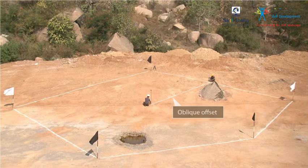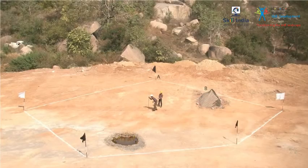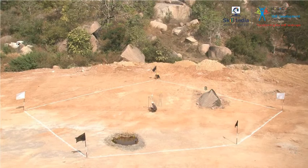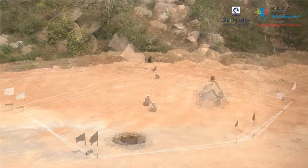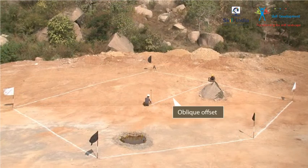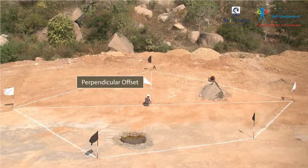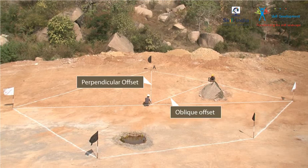So, remember, the two types of offsets are perpendicular offset and oblique offset.